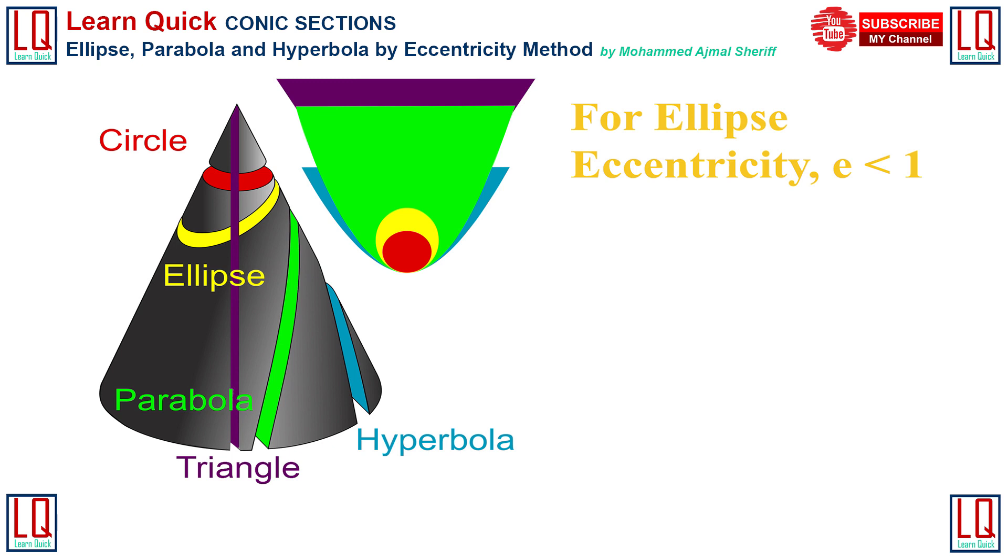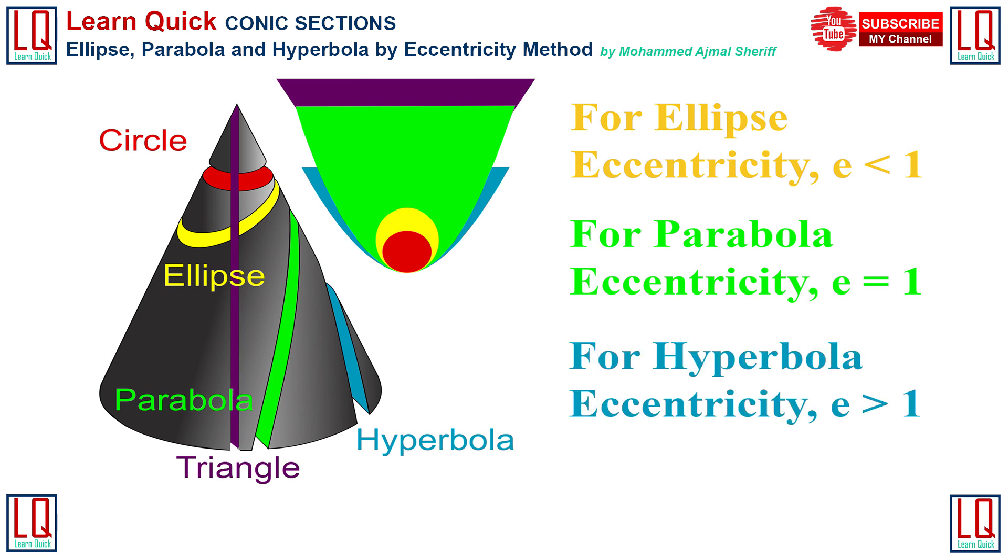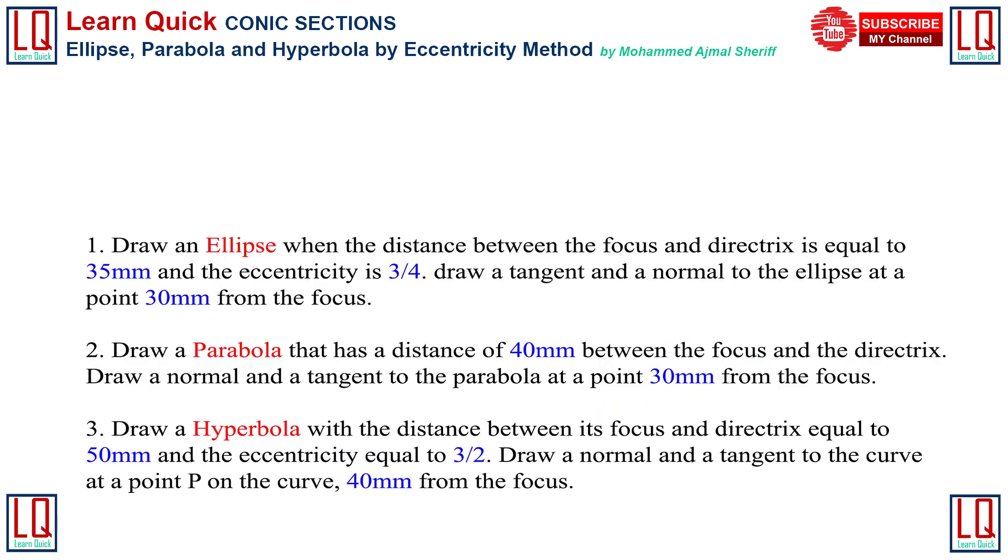So the value of eccentricity is less than 1 for an ellipse, equal to 1 for a parabola and greater than 1 for a hyperbola. Now we will draw the conic section by the given dimension and values using the eccentricity method. We will start with ellipse with distance between the focus and directrix equal to 35 mm and eccentricity 3 by 4.